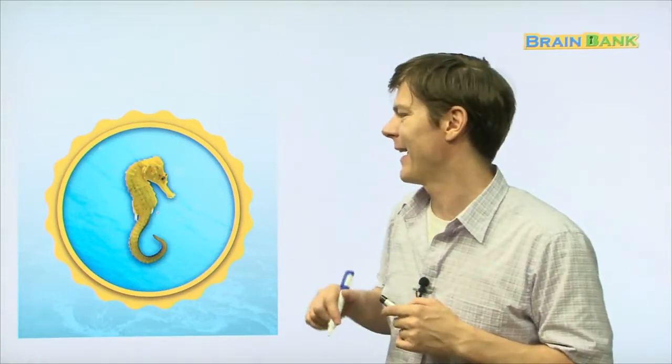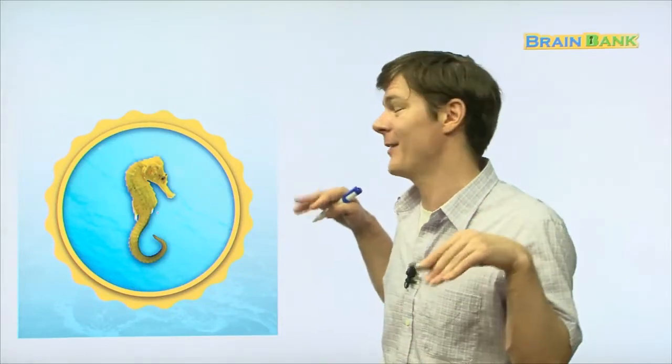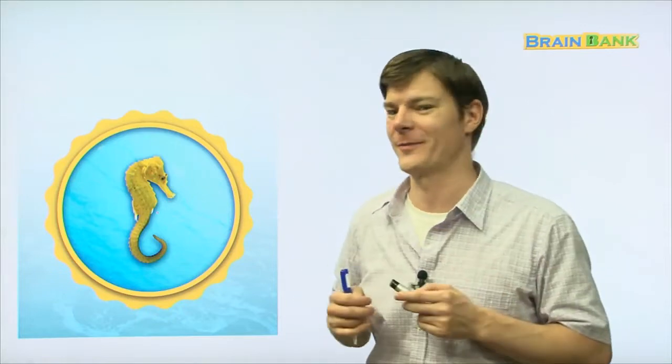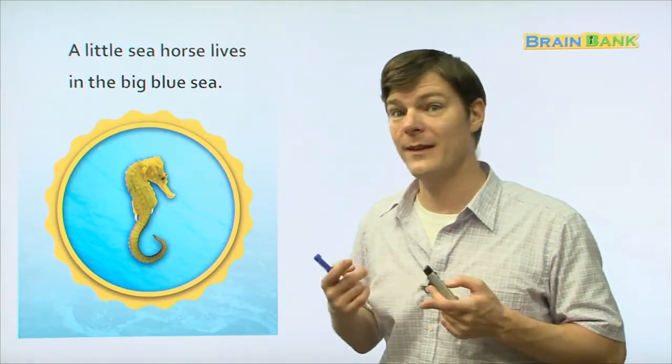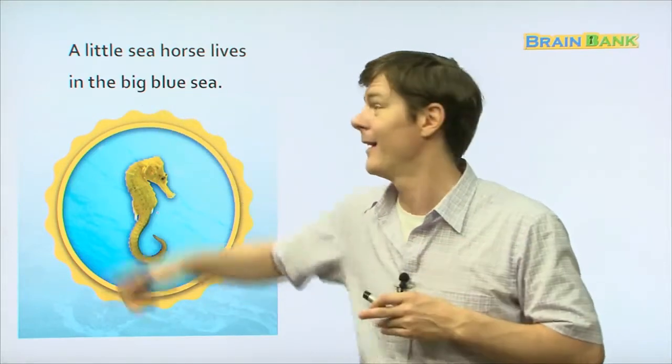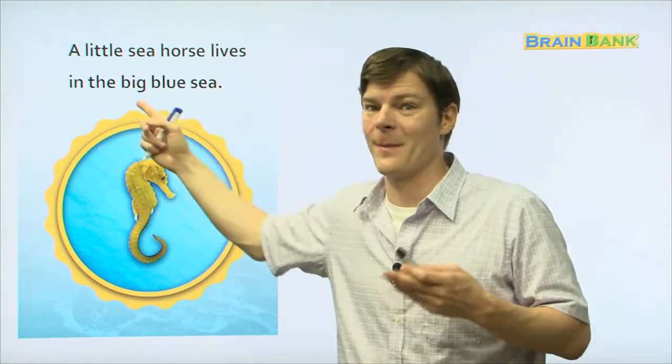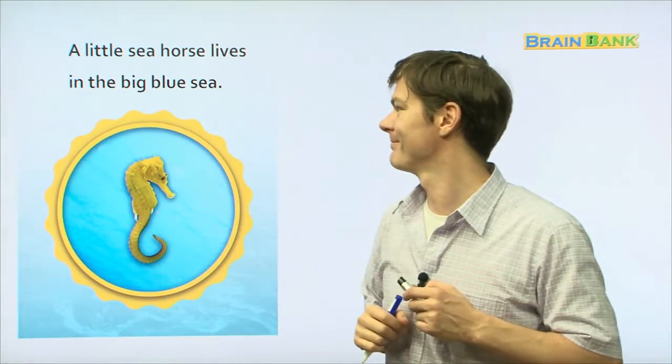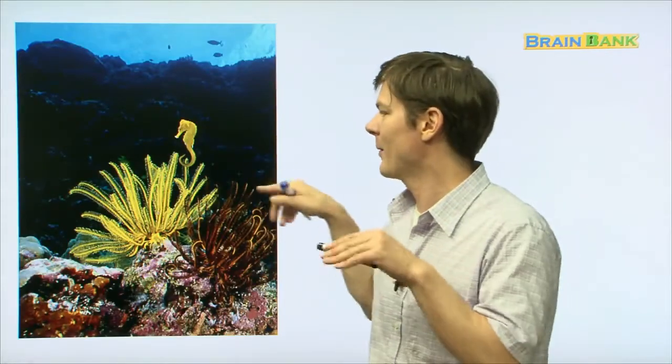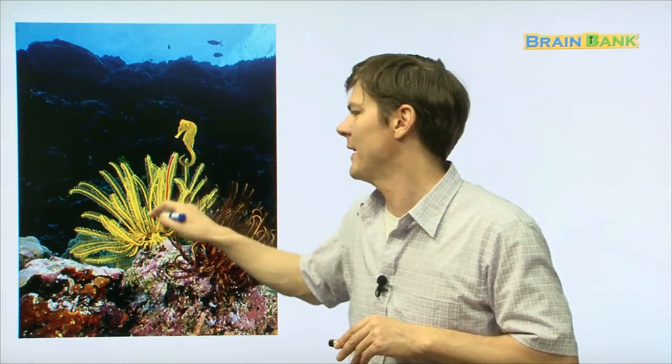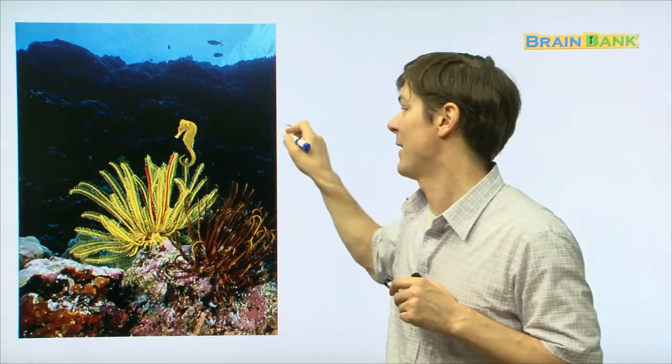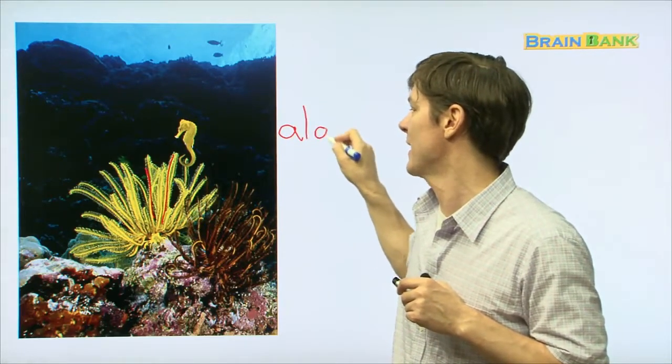And then there's this. Do you know what this is? This is a seahorse. And the seahorse is known as what in Korean? Do you know? Heema. That's right. Heema. And he has two little fins on the side of his body that help him move through the water. A little seahorse lives in the Big Blue Sea. Everyone repeat with me. A little seahorse lives in the Big Blue Sea. And there he is, swimming around these little things right here.